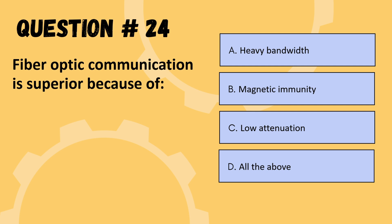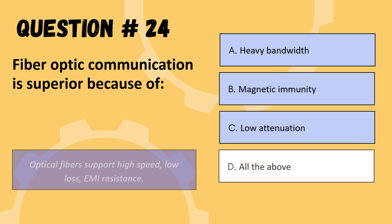Next question: fiber optic communication is superior because of — options are high bandwidth, magnetic immunity, low attenuation, or all of the above. The correct option is D: all of the above.